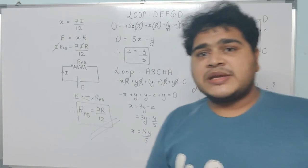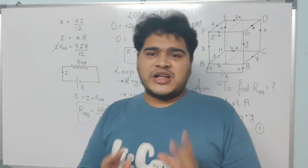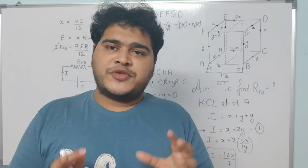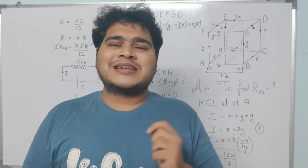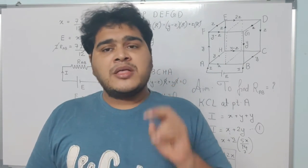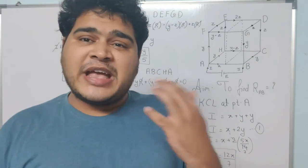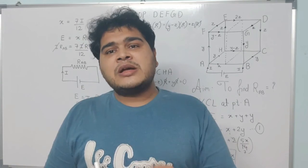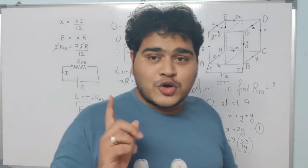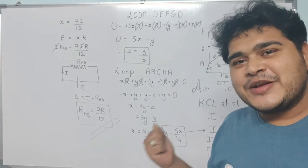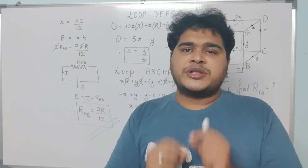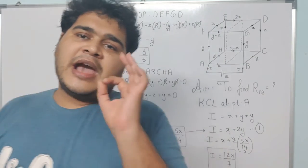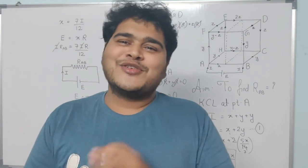To summarize all three derivations: the resistance between diagonally opposite corners of a cube is 5R/6; the resistance across the face diagonal is 3R/4; and the resistance between adjacent corners of the cube is 7R/12. I hope all three derivations — using symmetry, KCL, and KVL — are clear. Thank you.